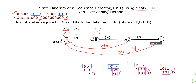The sequence detector is used to detect the sequence of bits in the given input data. For example, if the given input data has a group of bits, identify the number of bits 1011 to be detected in the given input data starting from the MSB. These are the bits to be detected using the sequence detector, such as 1011.